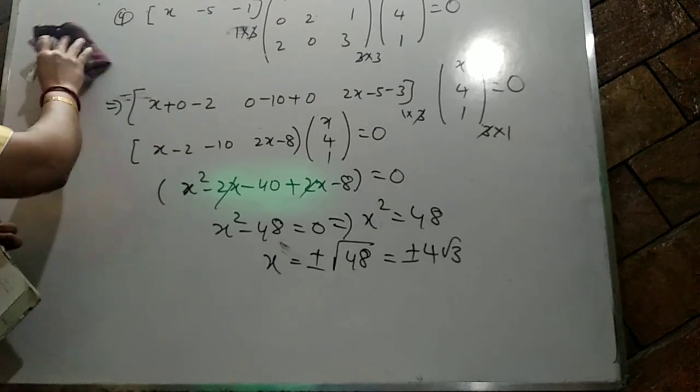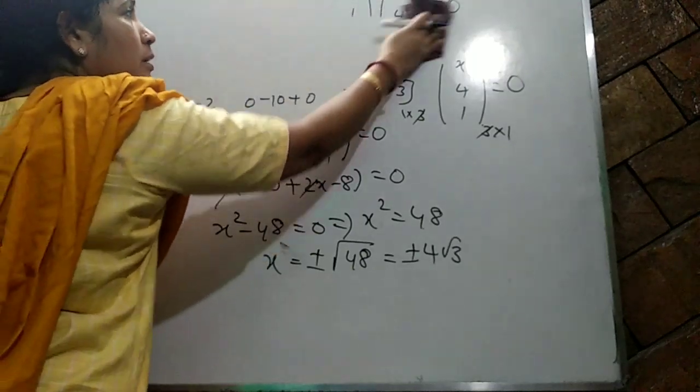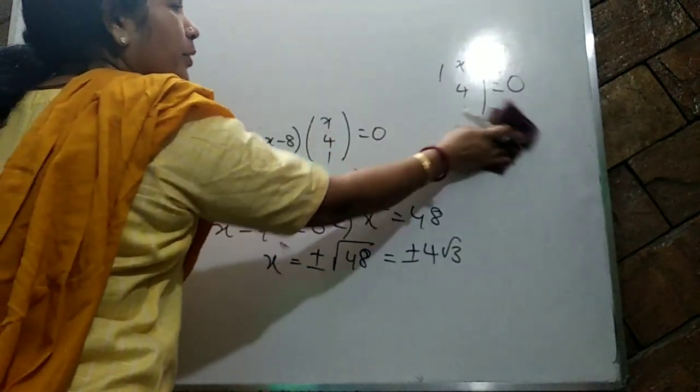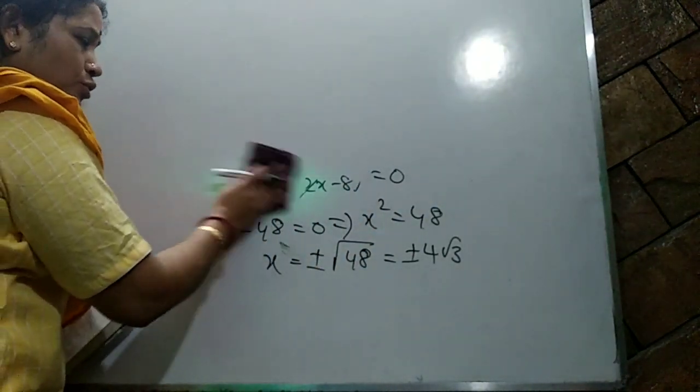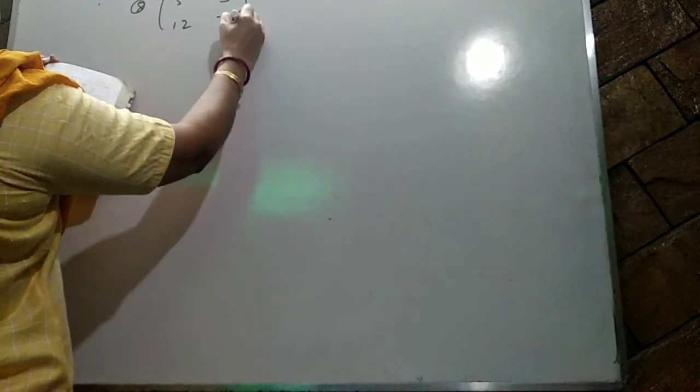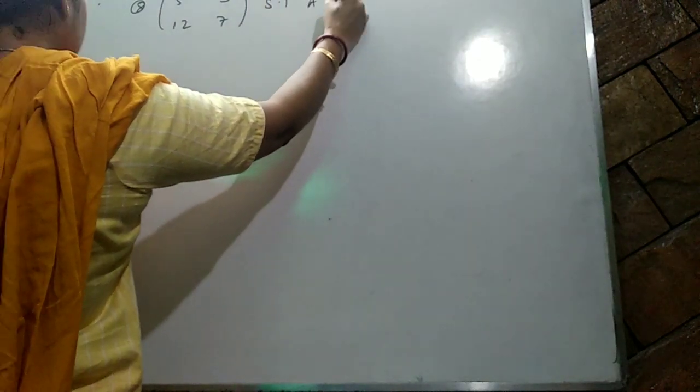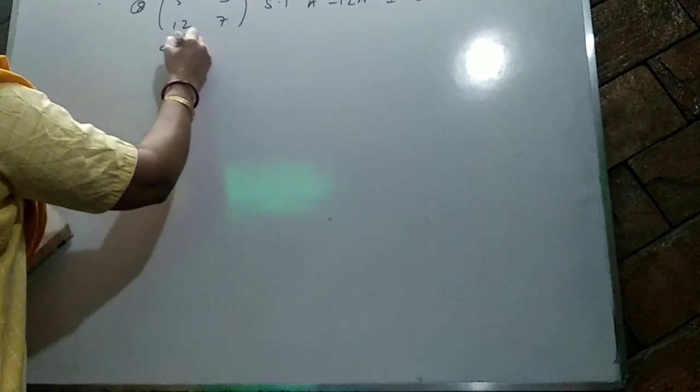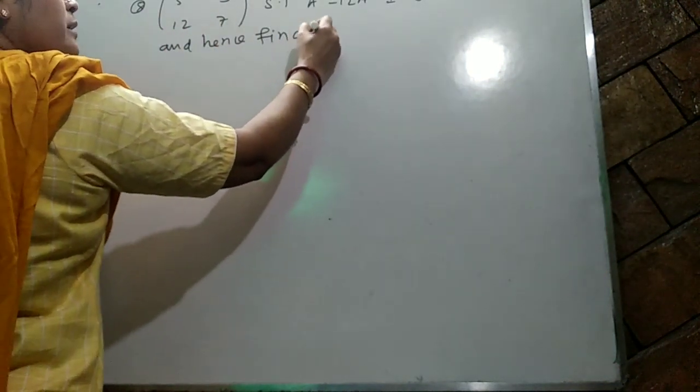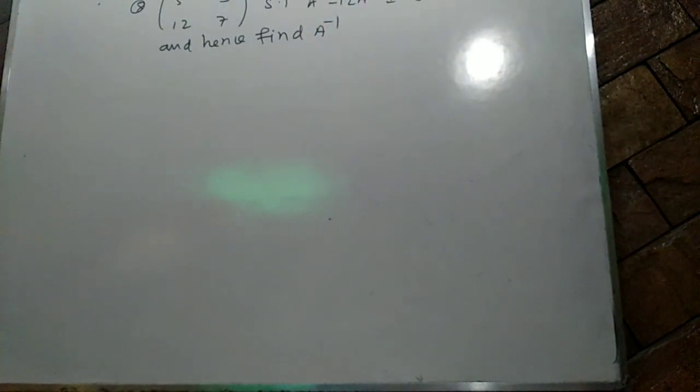Question number eight is homework, but I am adding this question: show that A² minus 12A minus I equals 0, and hence find A inverse. I am taking the matrix A equals [5, 3; 12, 7]. First, find A²: A times A equals [5,3;12,7] times [5,3;12,7]. Calculating: element (1,1) is 25+36=61, element (1,2) is 15+21=36, element (2,1) is 60+84=144, element (2,2) is 36+49=85.